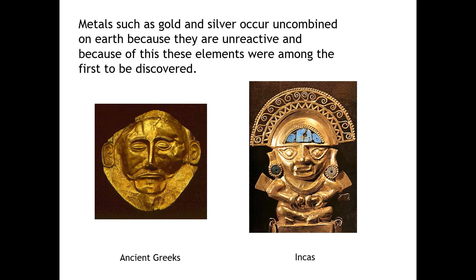Metals such as gold and silver occur uncombined on Earth, i.e. they're not joined to oxygen and other elements, and this is because they're very unreactive elements. Because of this, these elements were the first to be discovered. You can see that the Greeks worked with gold as well as the Incas in South America, so ancient civilizations worked with gold because it was easy to extract.